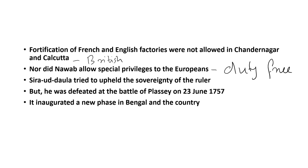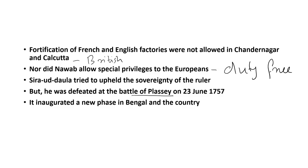Siraj ud-Daulah tried to uphold the sovereignty of Bengal until his defeat in the Battle of Plassey on 23 June 1757. In this battle the British defeated Siraj ud-Daulah and British control began to grow prominent. It was confirmed by another battle — the Battle of Buxar in 1764. British authority was completely established in Bengal with the Battle of Buxar.